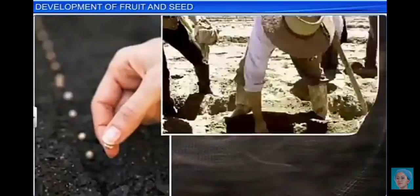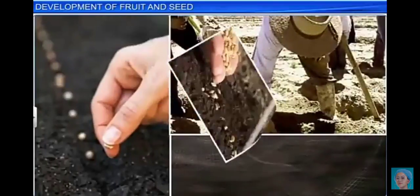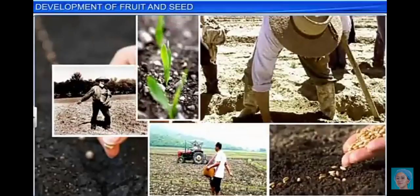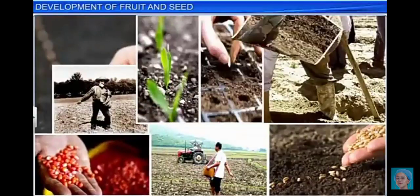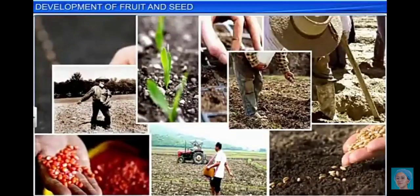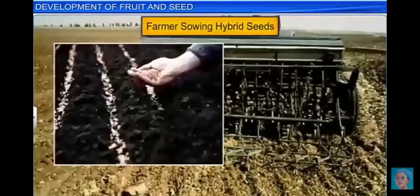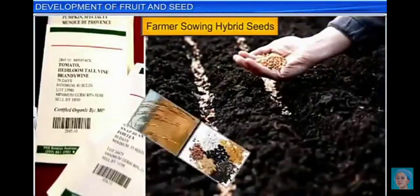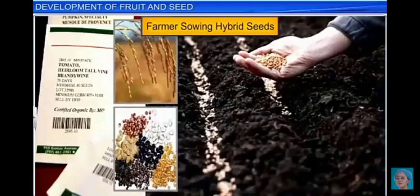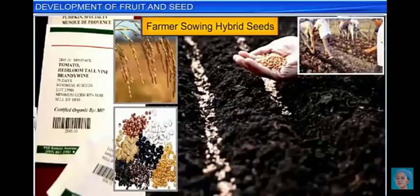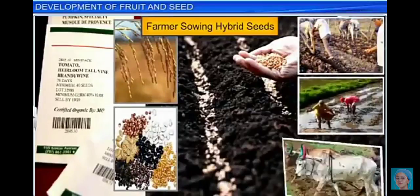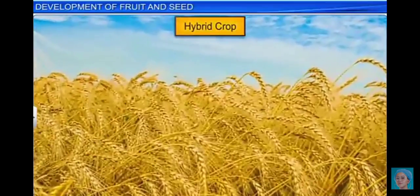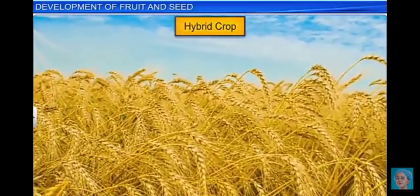Seeds, which help in the propagation of angiosperms, also form the crux of agriculture. Interestingly, farmers in recent times have started using hybrid seeds developed through artificial cross-pollination techniques. These seeds guarantee increased productivity and superior crop quality.